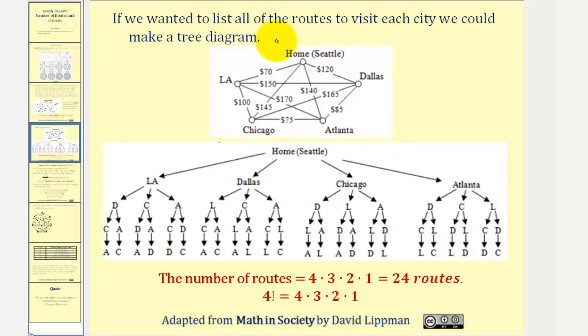Now if we wanted to list all the routes to visit each city, we could make a tree diagram pictured here. The nice thing about doing this is we can see all 24 routes. The one route that we used as an example was if we start at Seattle, notice how we have four choices. So if we select, for example, LA,